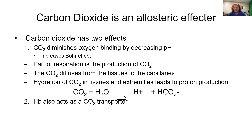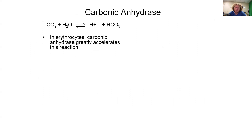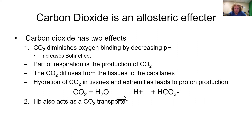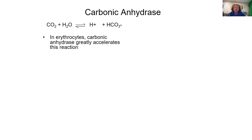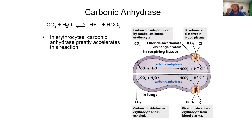Hemoglobin also acts as a CO2 transporter. CO2 is bound by hemoglobin to transport it out, and CO2 is also hydrated to produce a hydrogen ion, which increases the Bohr effect by producing HCO3- and a proton. In erythrocytes, an enzyme known as carbonic anhydrase greatly accelerates that reaction — it happens, but biological agents make it occur quite a bit faster.